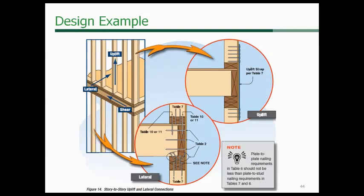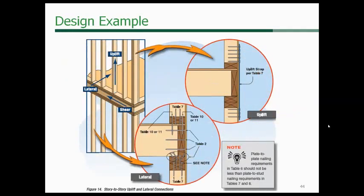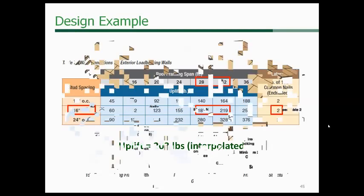Now we'll design some elements from the illustration. For the uplift strap in Table 7, with stud spacing at 16 inches on center for our 30-foot wall, interpolating shows we need an uplift strap capable of resisting 203 pounds. For the lateral requirement, we need two 16D common nails for each connection. It really is that straightforward.